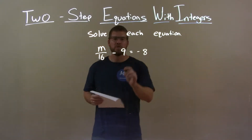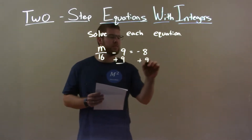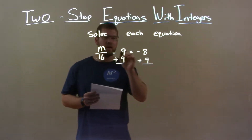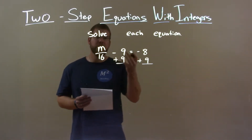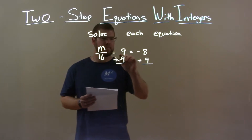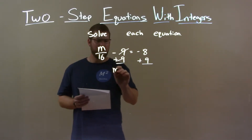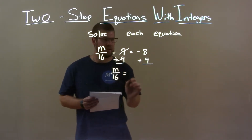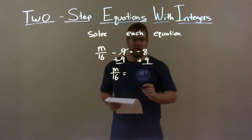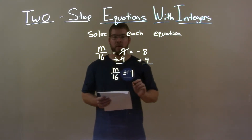First thing I want to do is add a 9 to both sides. Since we're subtracting by 9, the opposite is adding by 9. The 9's eliminate and we're left with M over 16 on the left. Negative 8 plus 9 is a positive 1 on the right.